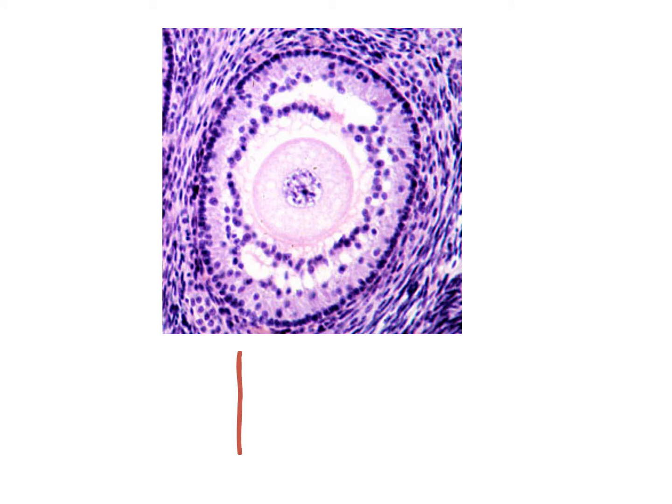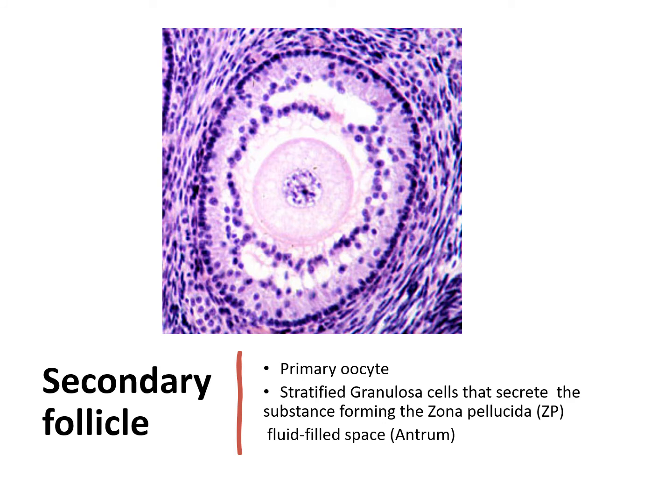What about this one? Notice that there is the beginning of a fluid-filled space. Later on, that will become larger and larger, forming what you call the antrum. This is the secondary follicle. Inside, you will see the primary oocyte, the stratified granulosa cells that secrete the substance forming the zona pellucida, plus the beginnings of the fluid-filled space which will later become the antrum.